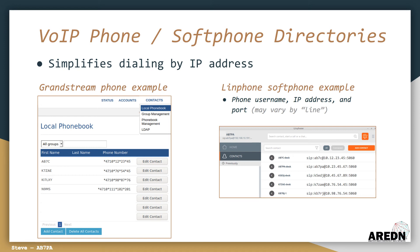One other disadvantage of direct dialing is that you need to enter the exact IP address of each phone you wish to call — that's a lot of keystrokes with a lot of opportunity for human error and frustration. Fortunately, most VoIP phones and soft phones have a built-in local directory feature. The example on the left shows the local phone book on a Grandstream phone, where star 47 is prefixed to the dotted decimal IP address, which is entered using the asterisk character rather than the period. The example on the right shows the contacts list in a Linphone soft phone running on a laptop connected to an Arden node, where you enter the remote phone's username, IP address, and port number. Most other soft phones will have a similar directory feature to help you keep track of phone IP addresses for direct dialing.